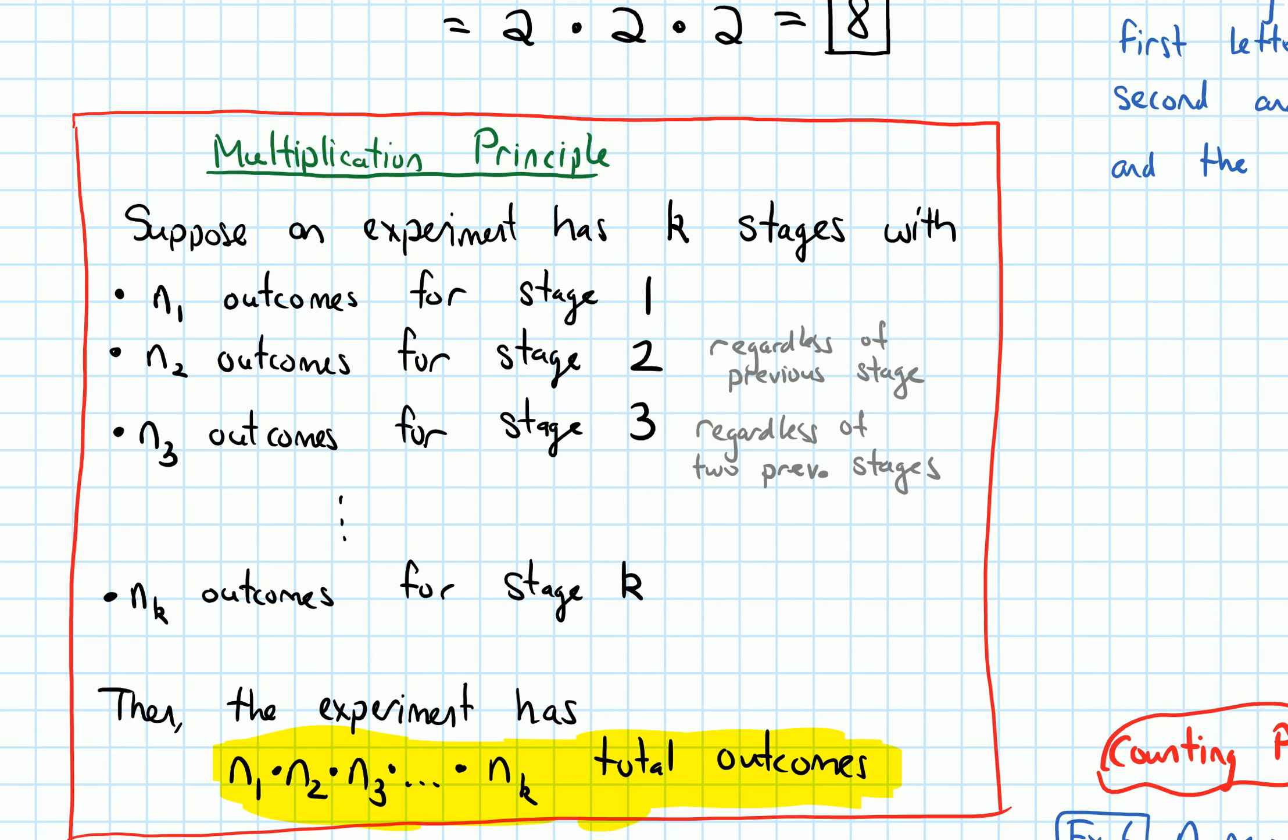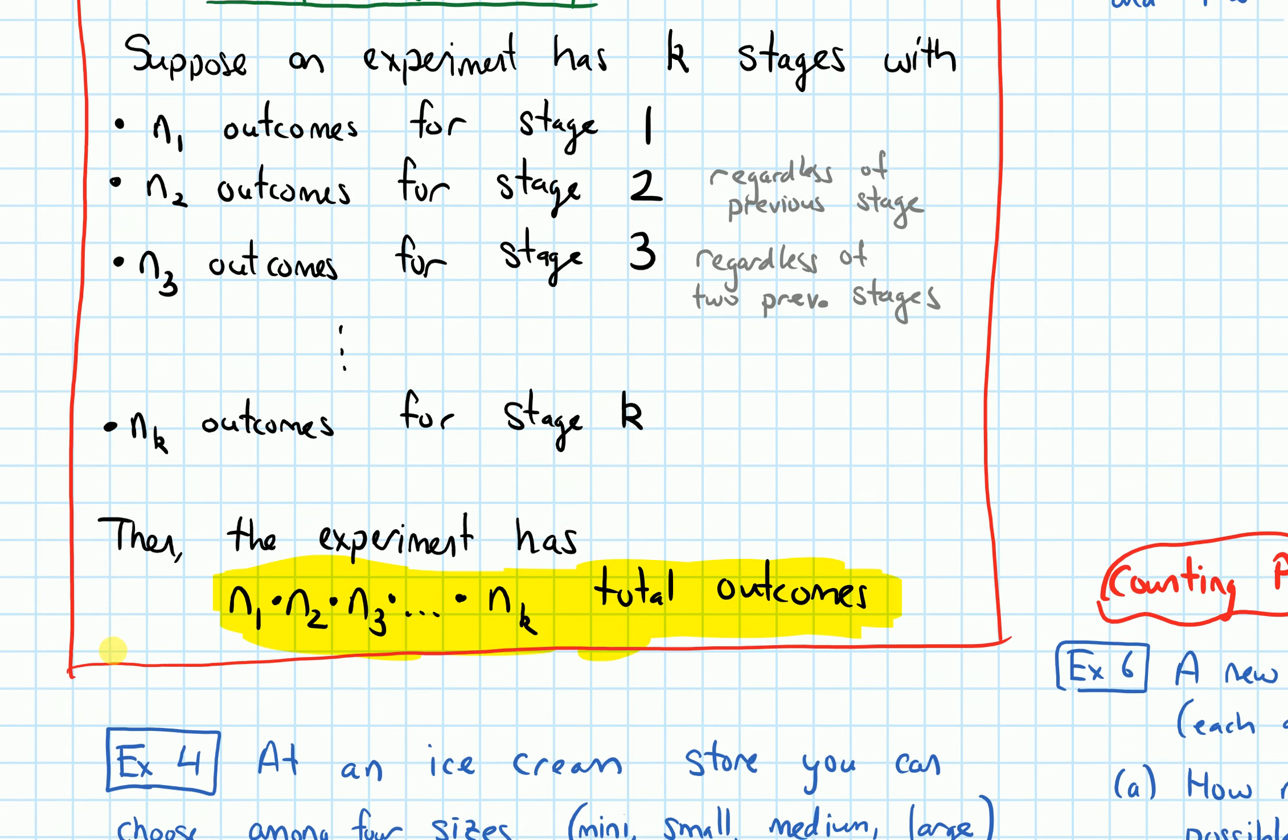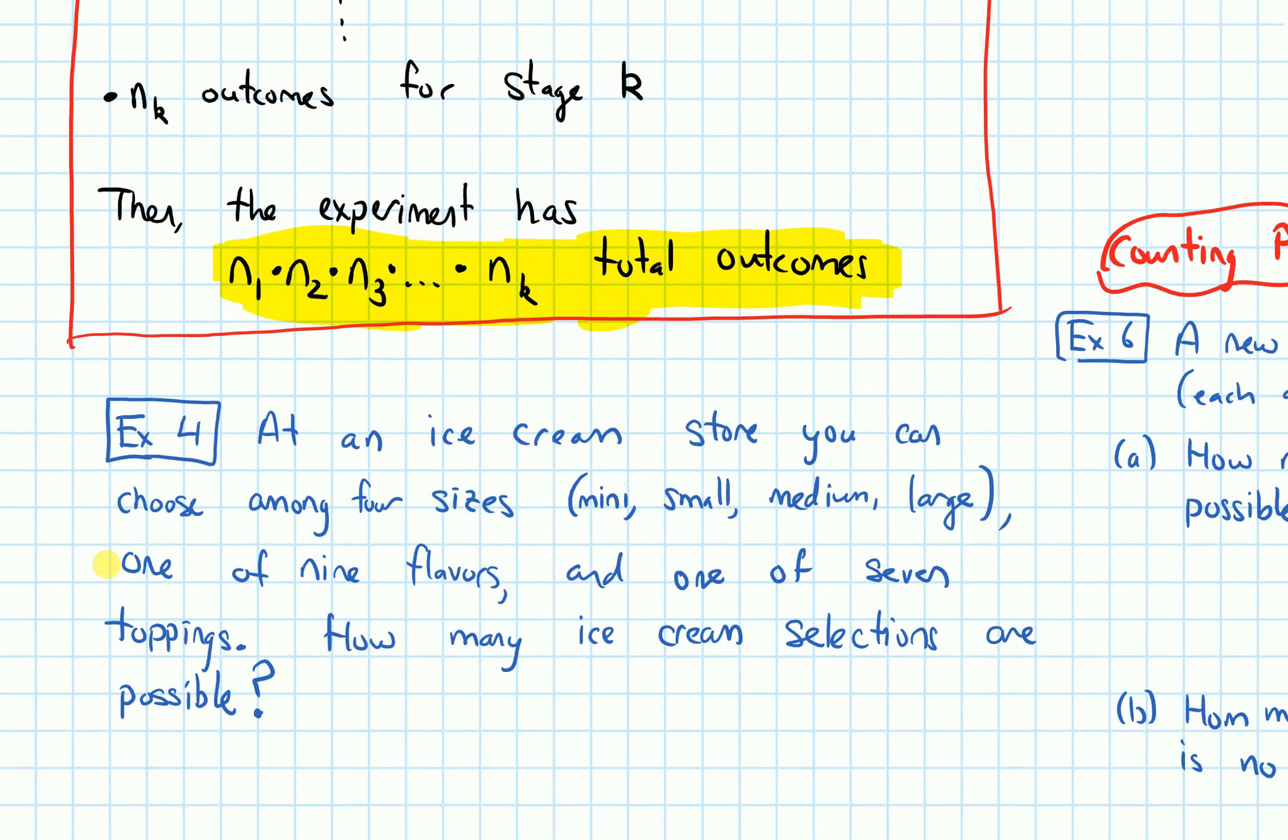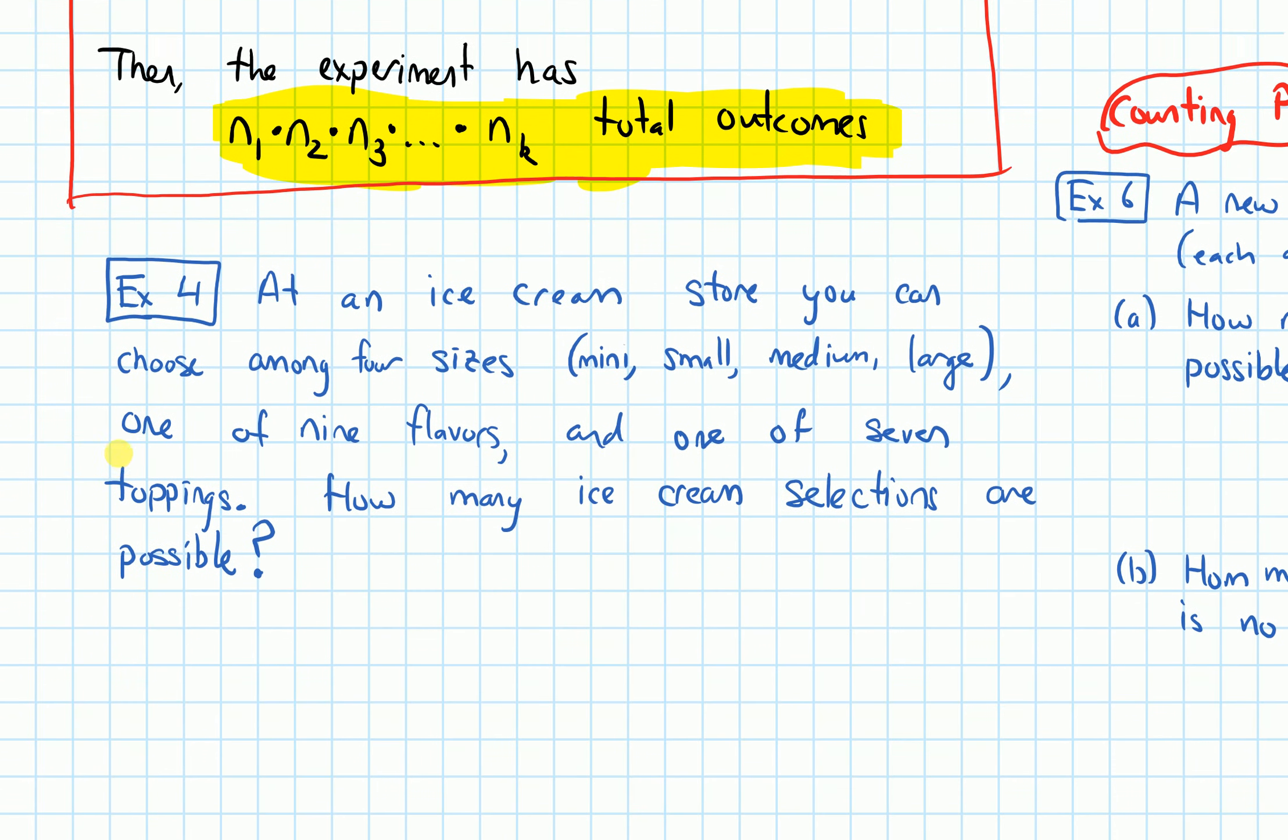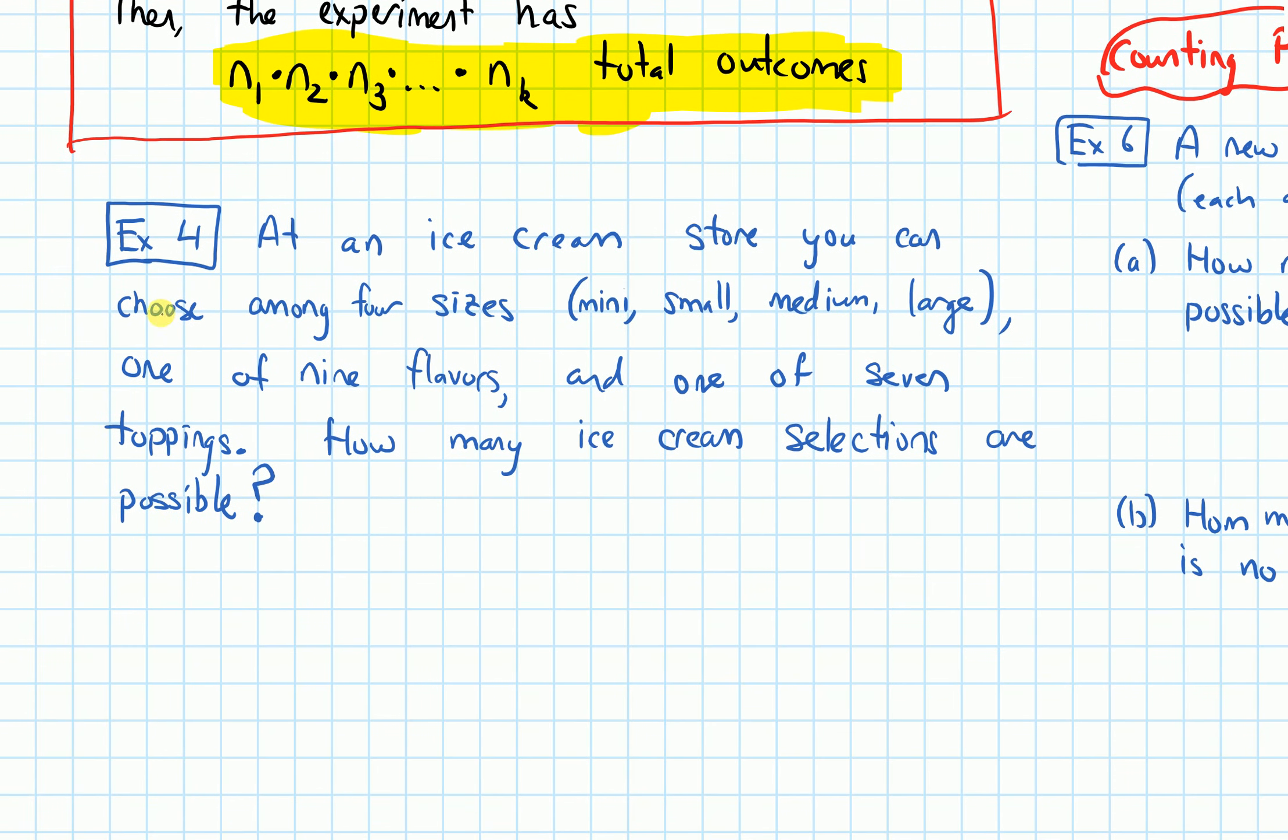All right, so let's use this formula on a more interesting example. This example says that at an ice cream store, you can choose among four sizes (mini, small, medium, and large), one of nine flavors, and one of seven toppings.